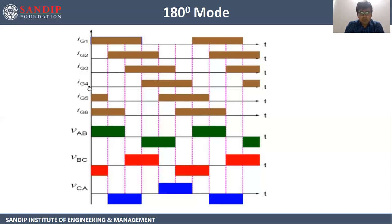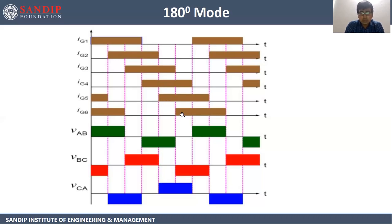Thyristor 4 will be triggered for 180 degrees (60 + 60 + 60). Then thyristor 5, and then thyristor 6. For the sixth thyristor, the cycle is shifted by 60 degrees with the remaining 120 degrees on the other side. Each cycle totals 360 degrees, with the six thyristors each separated by 60-degree intervals.